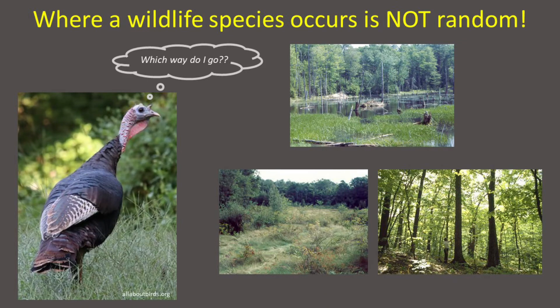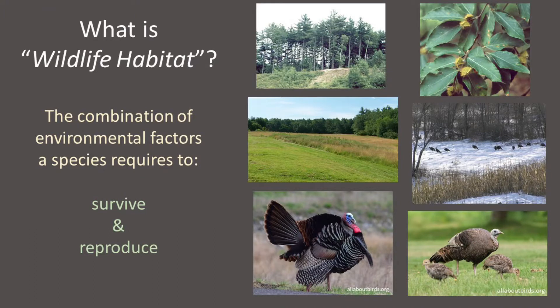From the very beginning, it's incredibly important to understand that where each wildlife species occurs within a landscape is not random. Each species occurs in certain areas that allow it to meet its needs to survive and reproduce. So in its simplest terms, we can define wildlife habitat as the combination of environmental factors that a given species requires to survive and reproduce.